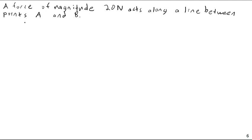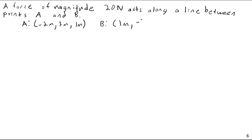A and B have coordinates as follows. Point A — notice I'm using parentheses, not brackets, because these are coordinates — is at negative 2 meters, 3 meters, 1 meter. And B has coordinates of 1 meter, negative 2 meters, 2 meters.